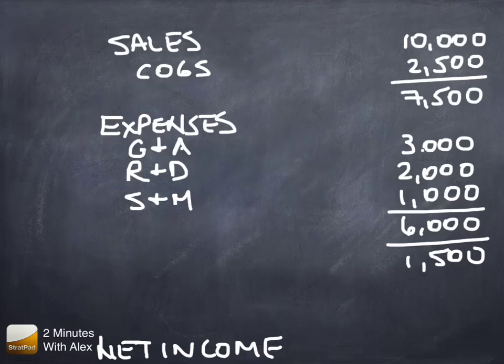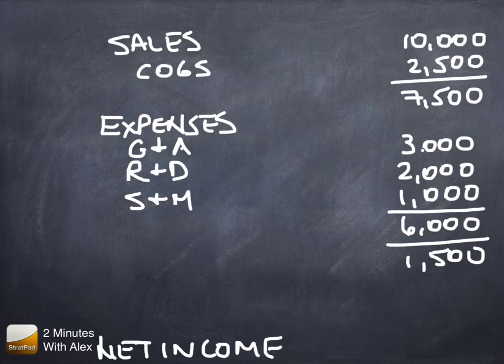Well, welcome back to the income statement. While you were gone, I just rewrote this and shortened some of the long words. Cost of goods sold has now become COGS, and that's how people would pronounce it. General and administrative is now G&A. Research and development is R&D. Sales and marketing is now S&M. It just cleans it up a little bit.